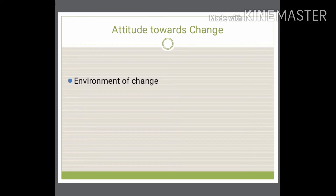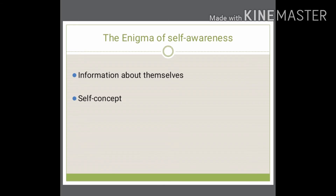The enigma of self-awareness: this is the point at which individuals become defensive and protective when encountering information about themselves. Whenever they hear something about themselves, they become indifferent or protective, which conflicts with their self-concept. They need to accept that information.